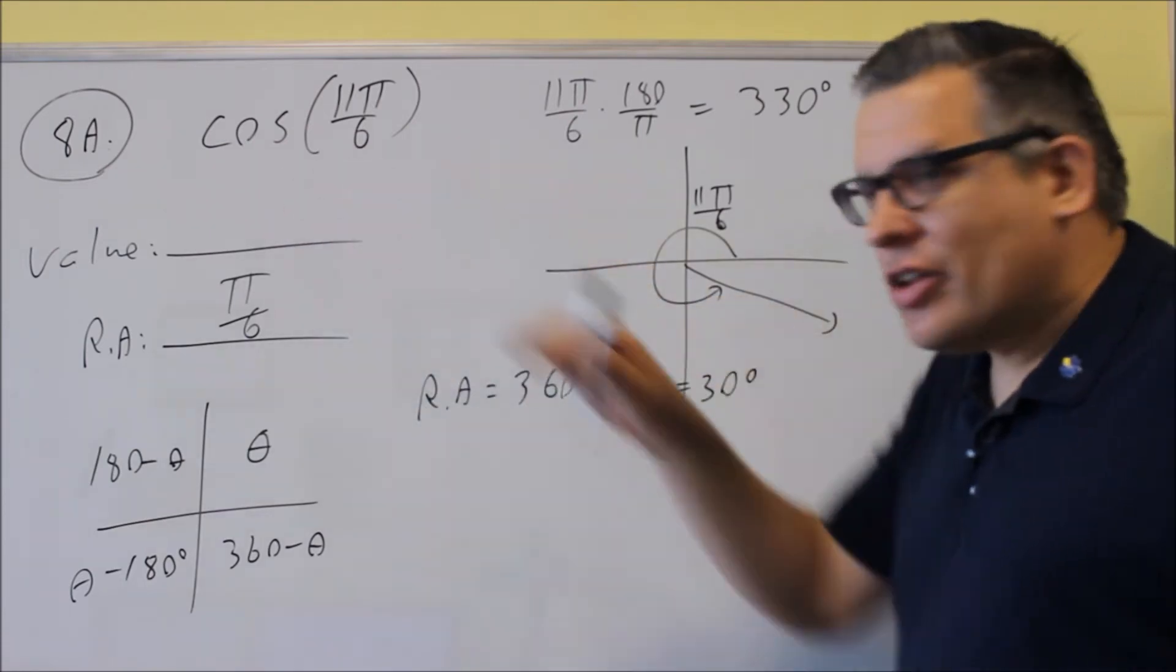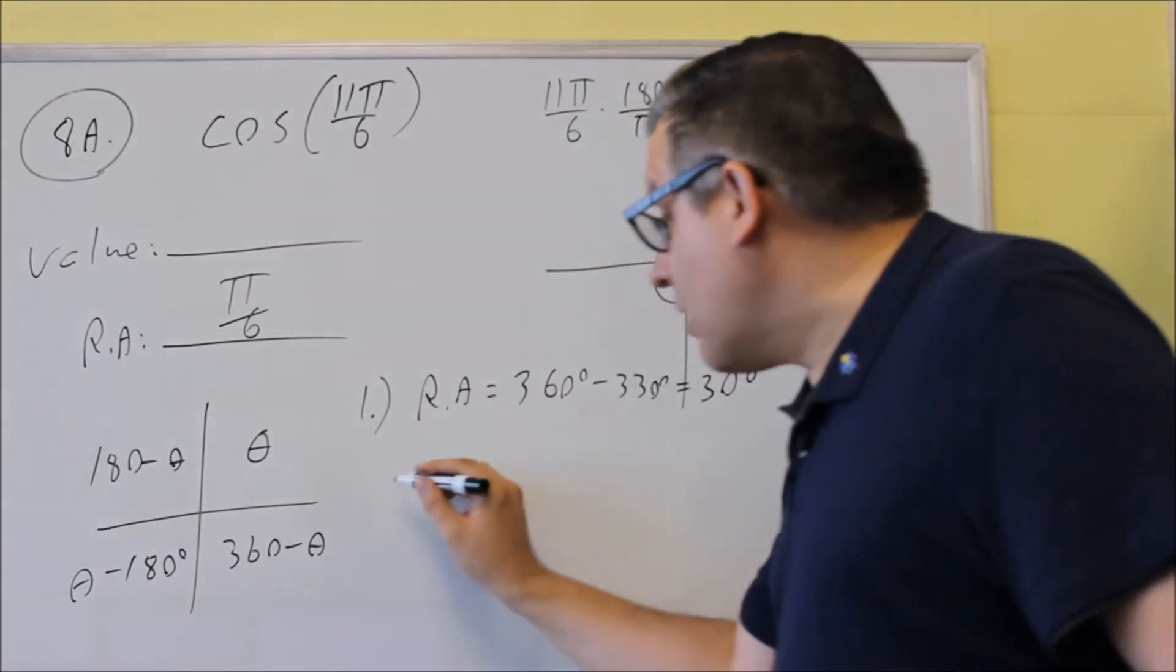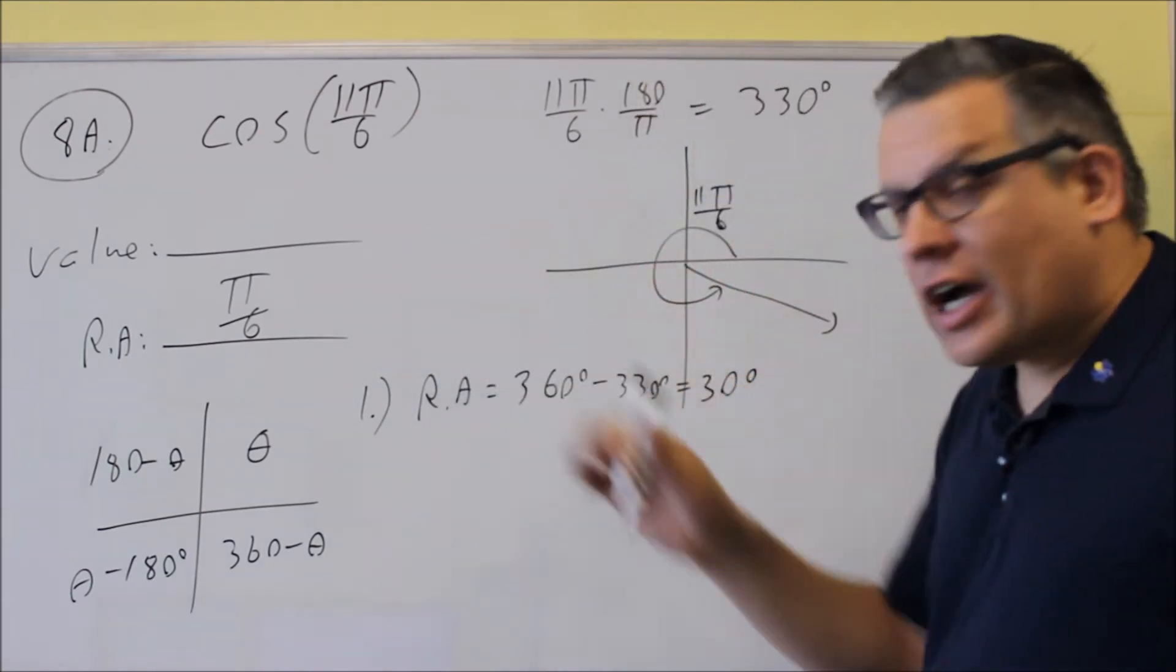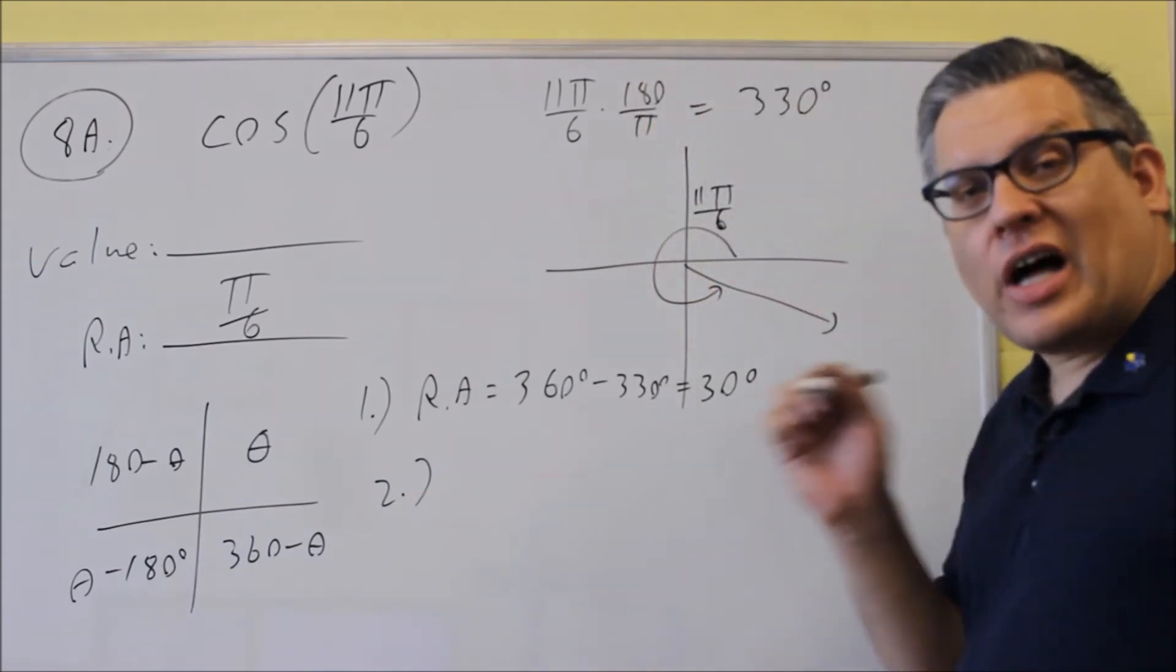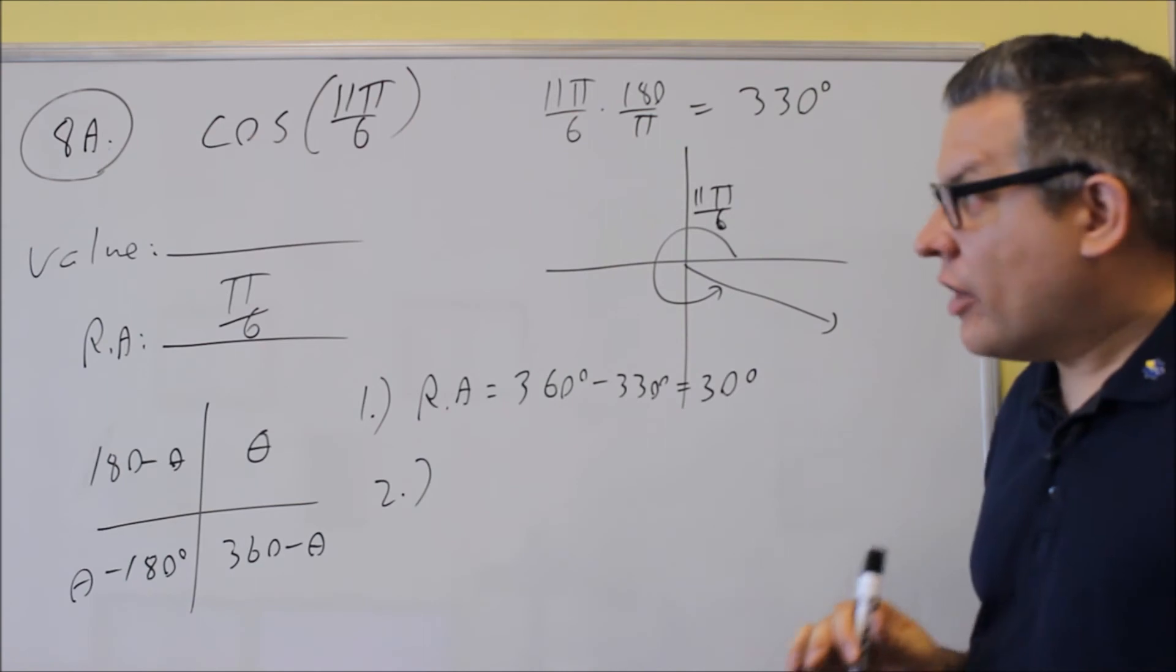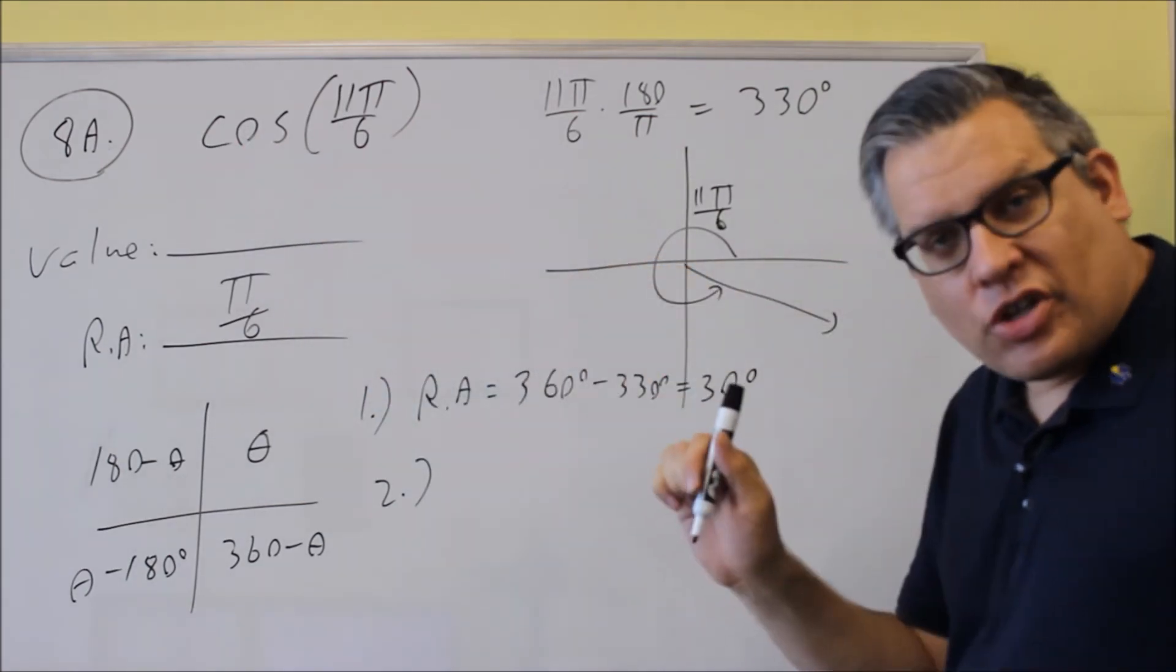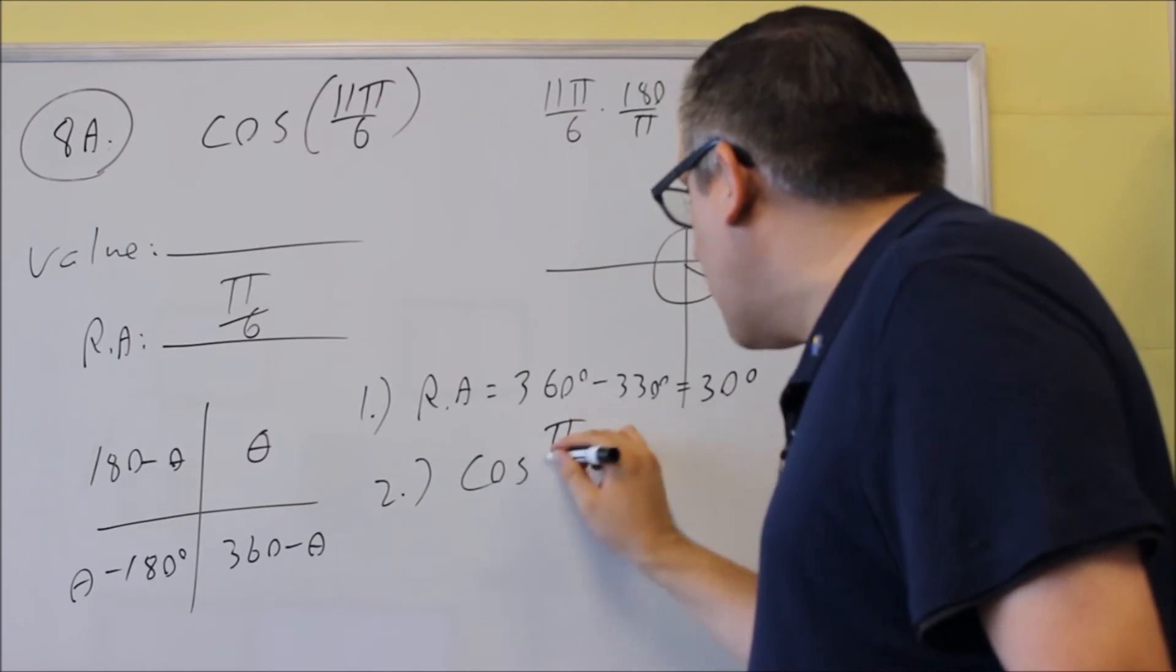If you want to find the value, remember there's a three-step process we talked about in class. The first step would be to find the reference angle. We already got our answer there. The second step is you want to apply the trig function to the reference angle. In this case, the trig function is cosine, so we're going to do cosine of our reference angle, cosine pi over 6.